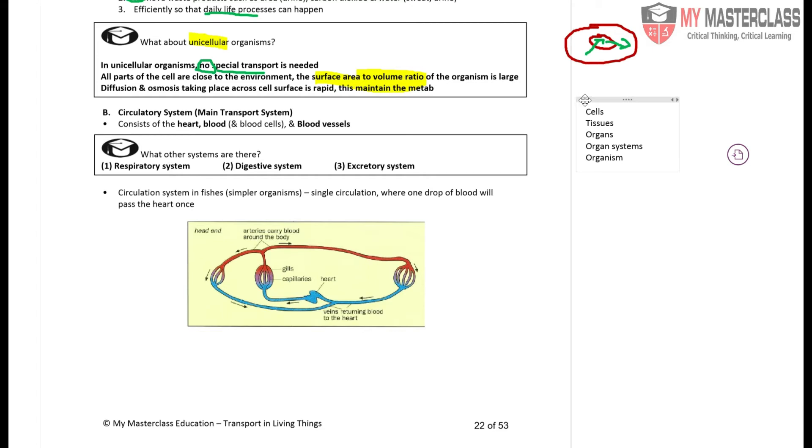What are some of the other systems that we have? We have the respiratory system, which we use for breathing and respiration. The digestive system is quite self-explanatory, used to digest food substances.